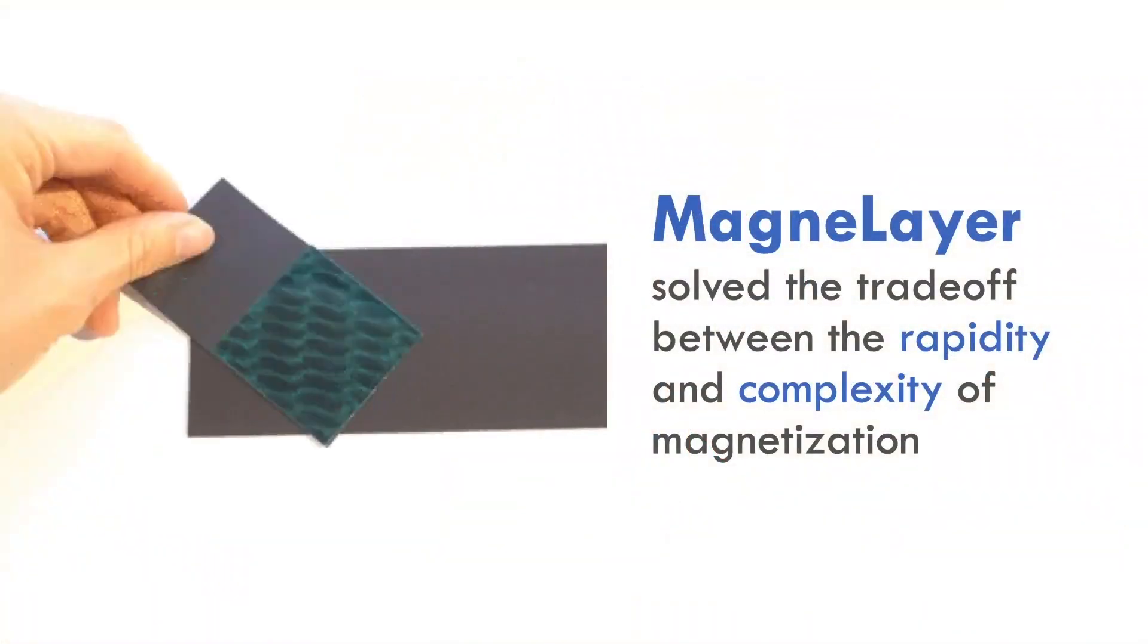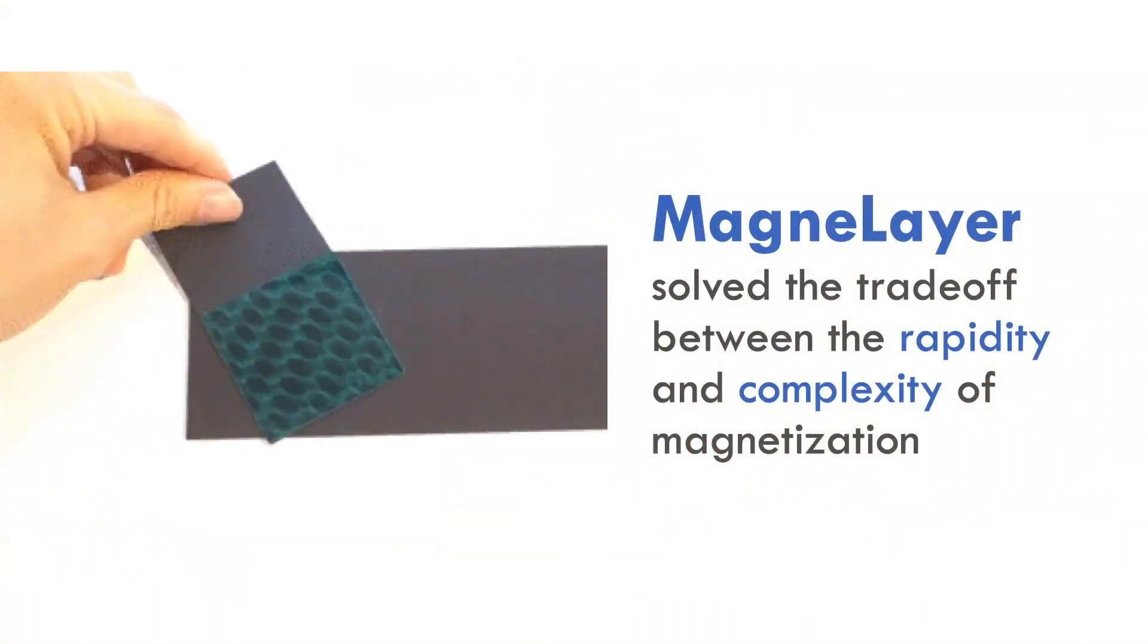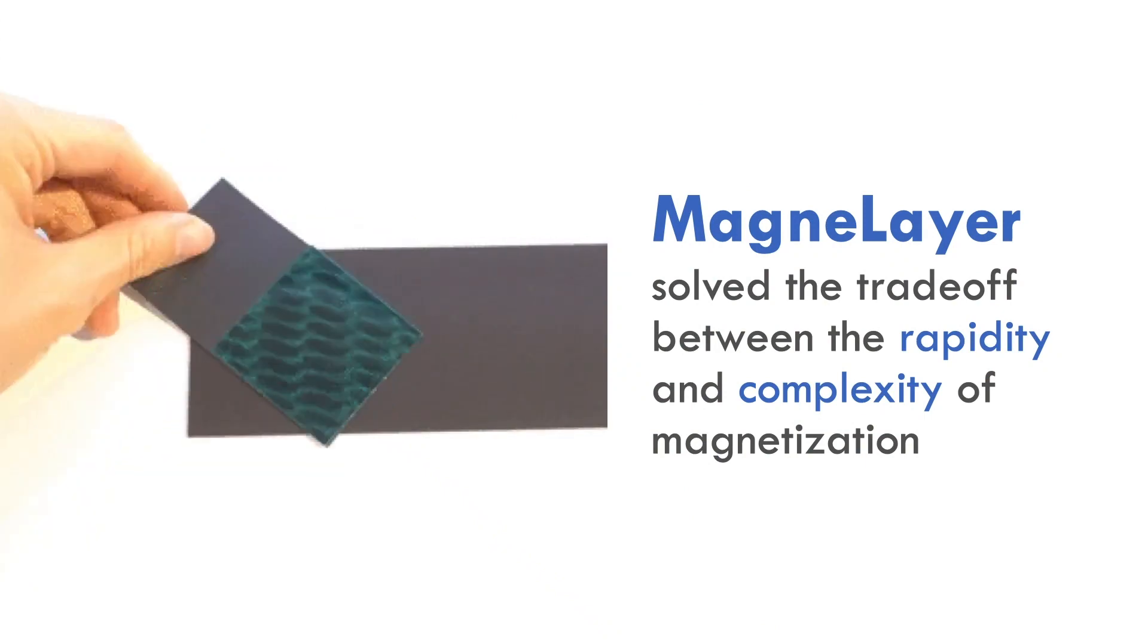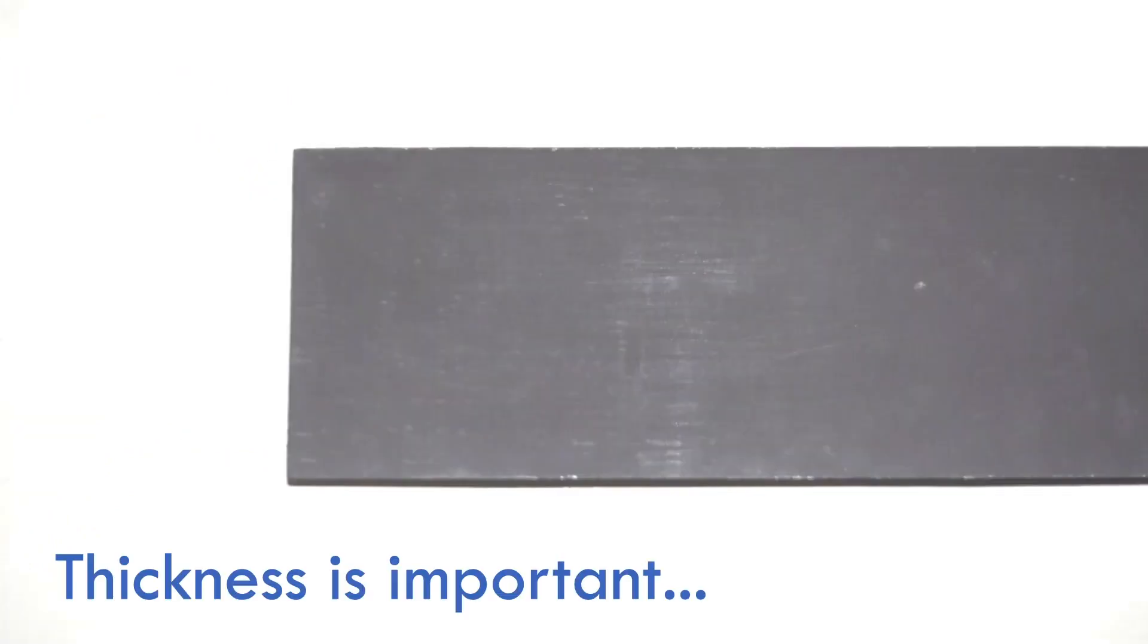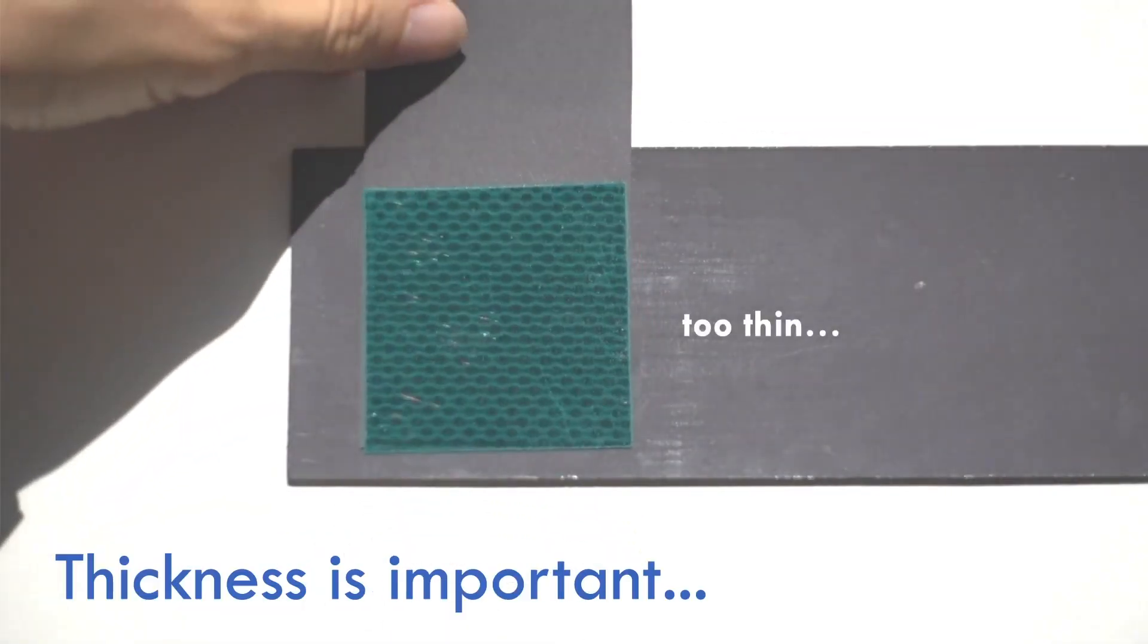By using the manual magnetizer and stacking the magnetized rubber sheets, we solved the trade-off between the rapidity and the complexity of magnetization. However, if either magnetic sheet is too thin or too thick, the superposed magnetic fields will not become a clear checkered pattern.